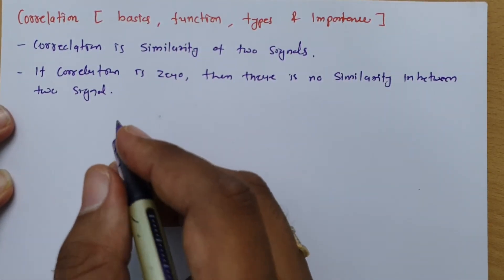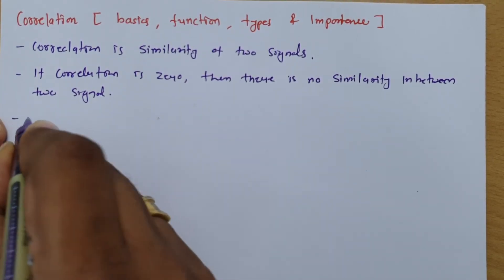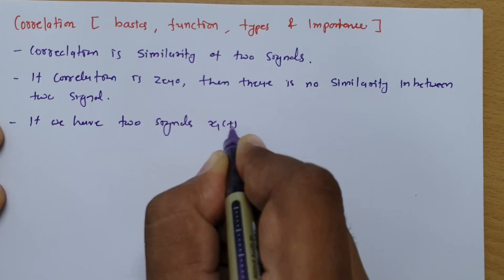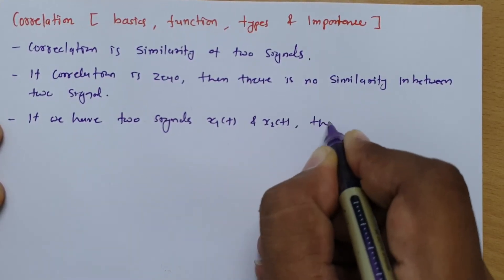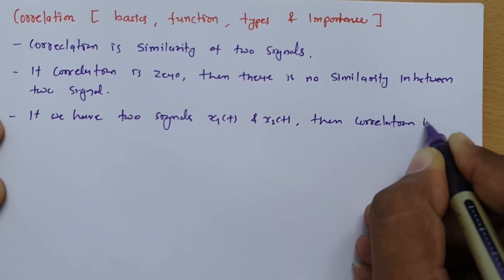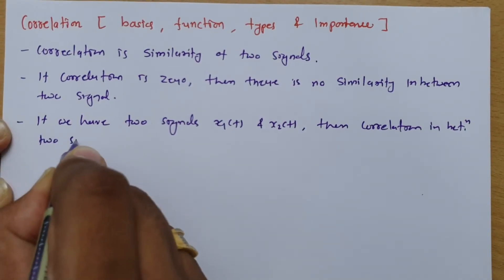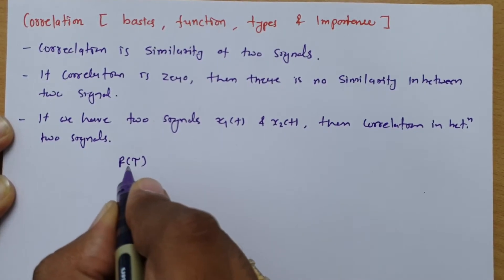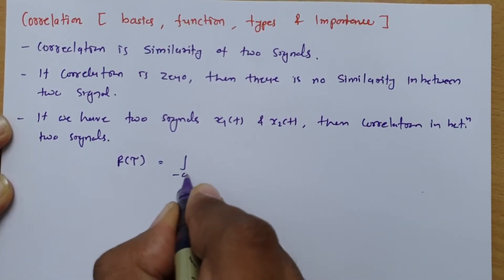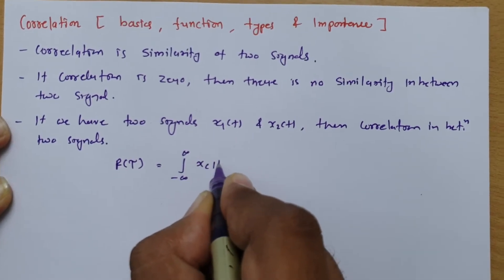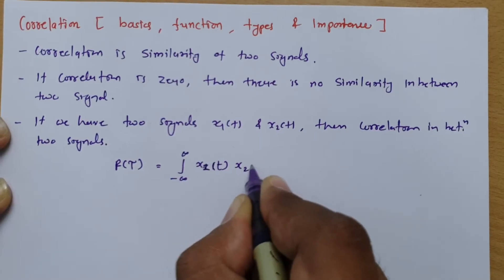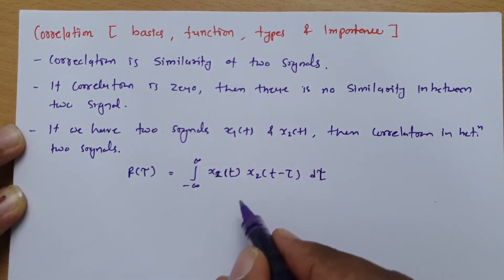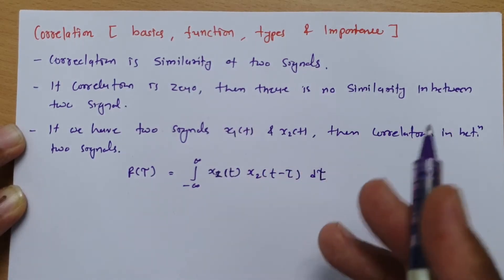Now I will define the function of correlation. If we have two signals x1 and x2, then the correlation between two signals is defined as R of tau, where tau is the shifting parameter. That is the integration from minus infinity to plus infinity of x1(t) multiplied by x2(t minus tau) dt.